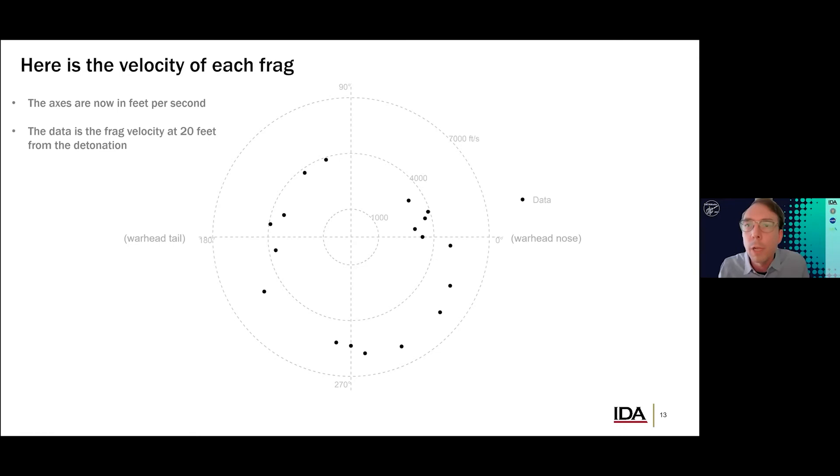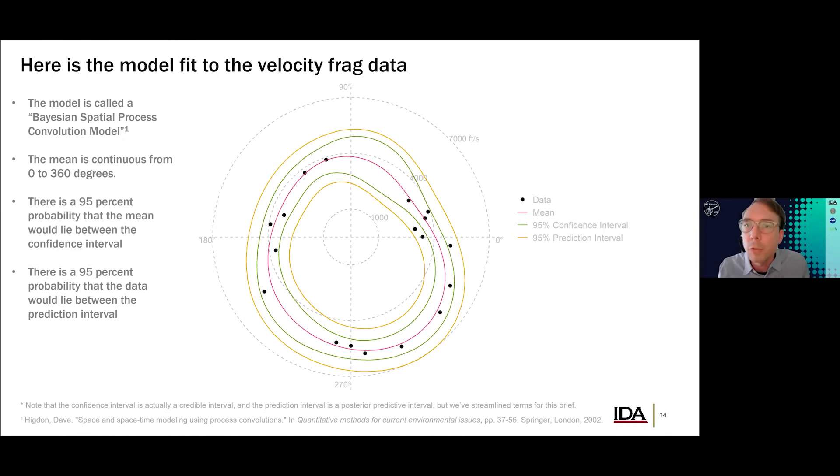Now, to make things simpler, let's just consider one fragmentation characteristic. And what I want you to think about is the velocity of each of these 18 fragments that are emanating from this 18-frag pipe bomb. Now, we can graph the velocity of each of these fragments as a distance from the origin in this plot. And in this case, there are high velocity fragments in the lower right quadrant of the plot. So coming off the right side of the nose. And there are lower velocity fragments in the upper right quadrant.